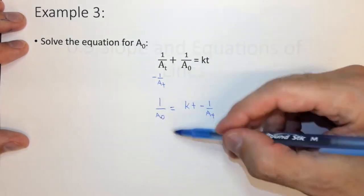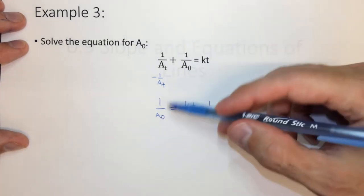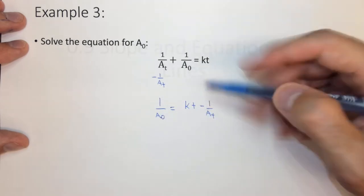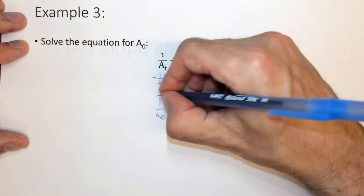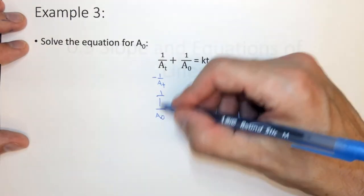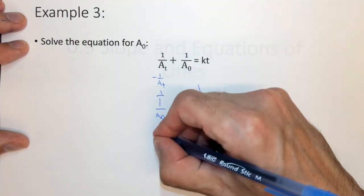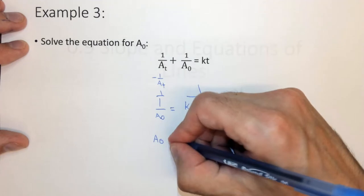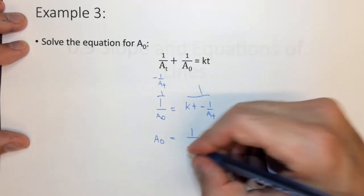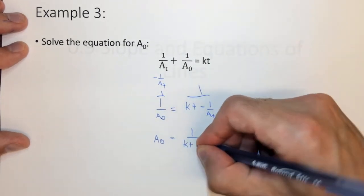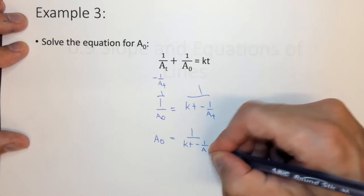Now because this is 1 over, I need to take the reciprocal, which means I flip them both upside down. Or said another way, I put 1 over this and 1 over this. When you put 1 over something that's 1 over, it just goes to the top. A0 equals 1 over KT minus 1 over A T.